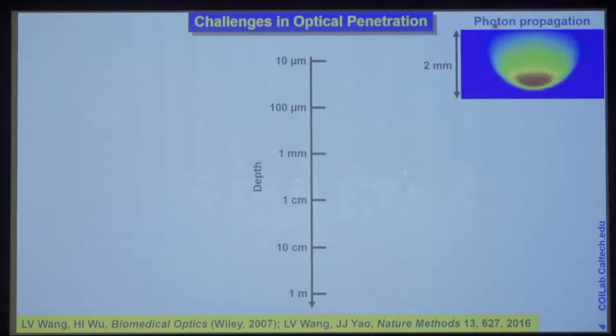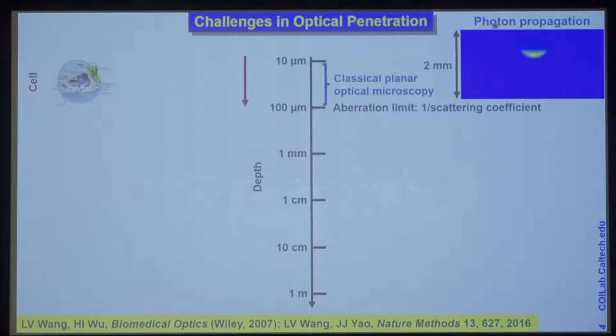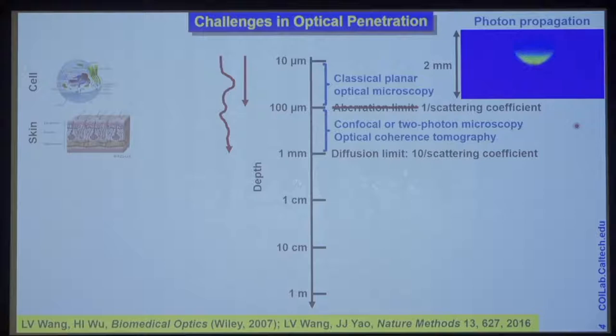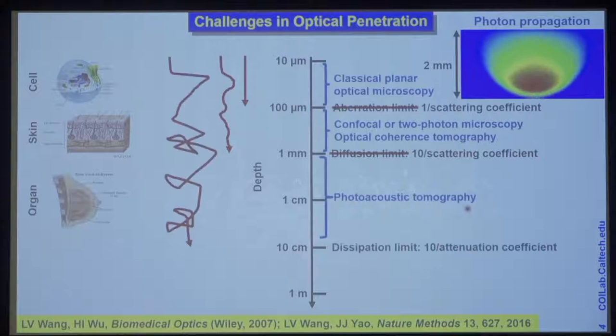If you look at the history of optical imaging, the first generation — planar optical microscopy — could not penetrate beyond one mean free path, namely the aberration limit, which is only 100 microns in tissue. Coherence-based modern techniques, such as two-photon microscopy, allow us to break that limit and provide 10 times deeper penetration, up to about a millimeter in scattering biological tissue. This limit is called the optical diffusion limit. Using photoacoustic tomography, we overcome this limit and enhance the penetration by nearly two orders of magnitude — not just multiple millimeters, but even multiple centimeters of penetration in scattering biological tissue.